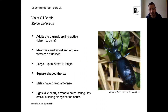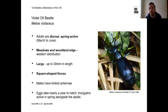The violet oil beetle is also a daytime spring-active species, typically emerging from March through to about June. Found in meadows and coastal grasslands, it is particularly associated with woodland edge — if you see oil beetles at the edge of broadleaf woodlands, it's quite likely to be a violet rather than a black oil beetle. It has a very western distribution, with most sites in southwest England, Wales, parts of northern England and Scotland. It's a large species, up to about 3cm, with a square-shaped thorax.